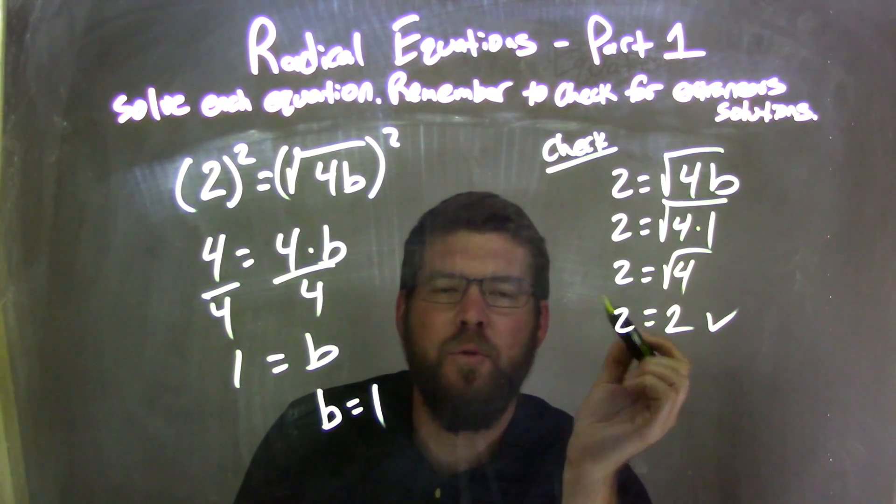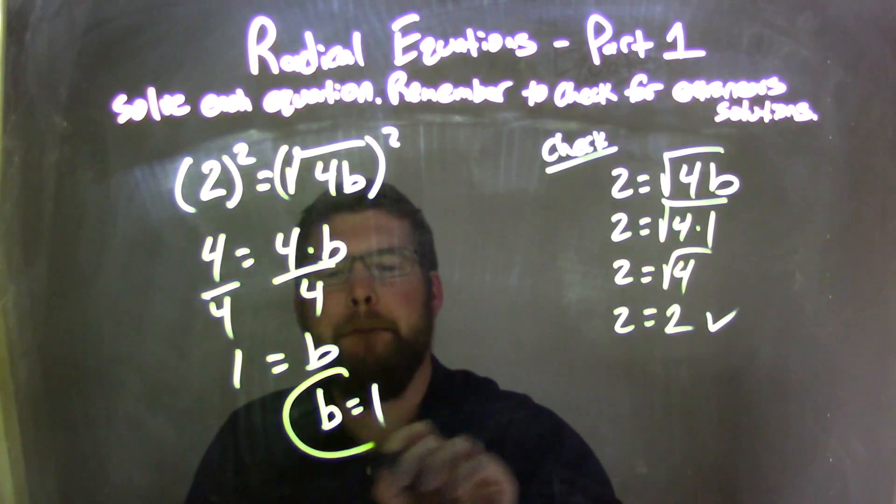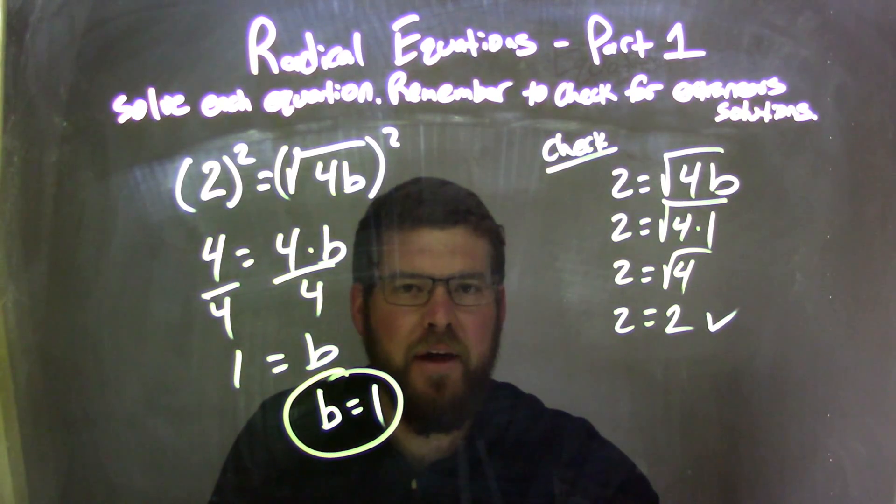Is 2. Left and right side are equal, fantastic, 2 equals 2. And so we're good now, there's no extraneous solutions, and so b equals 1 is my final answer.